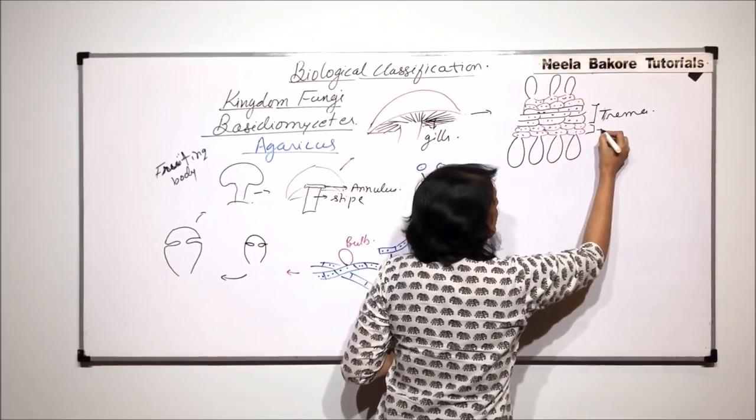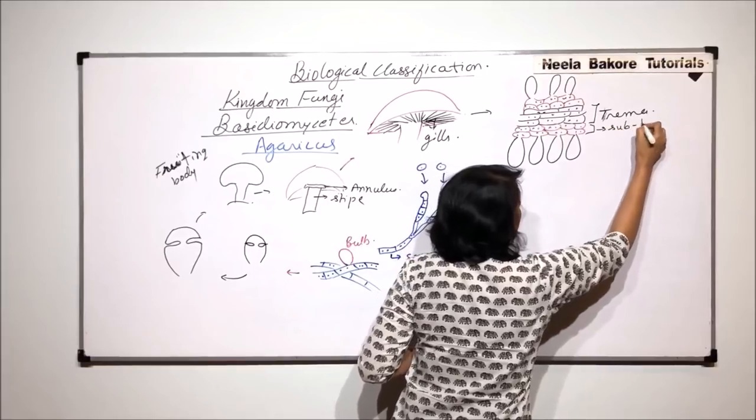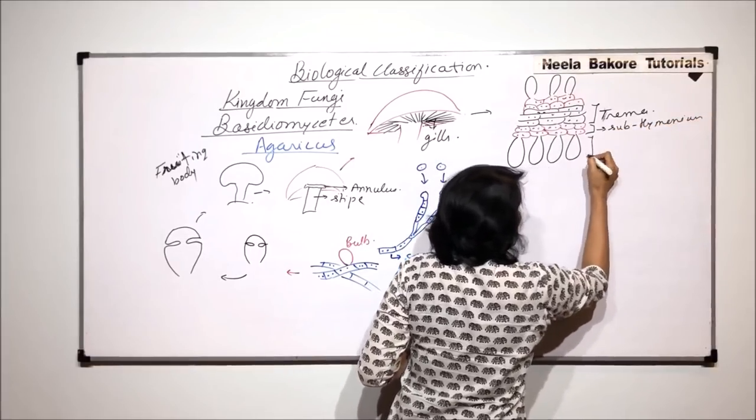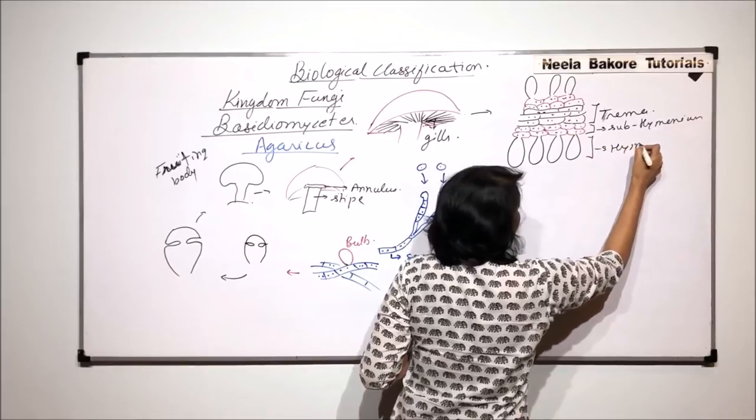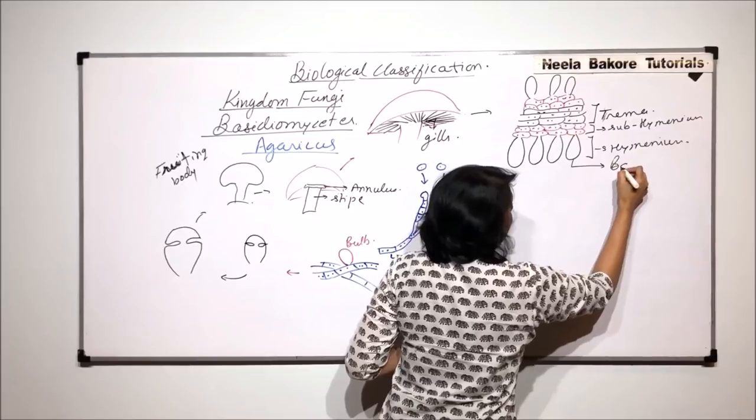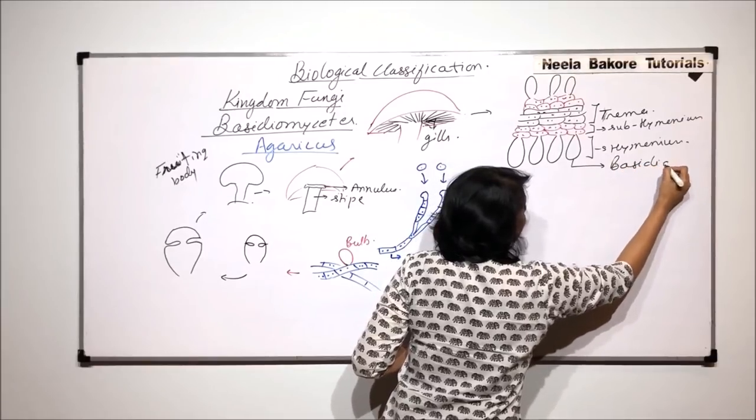This layer is known as the sub-hymenae. And this layer is called the hymenae. And these structures are the baesidia.